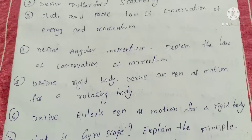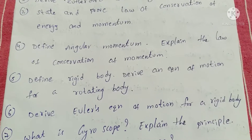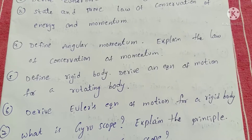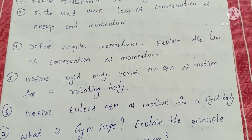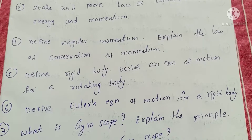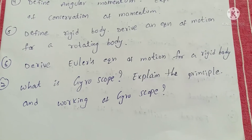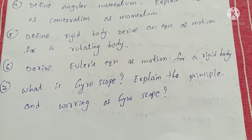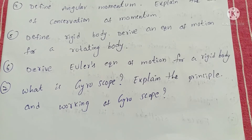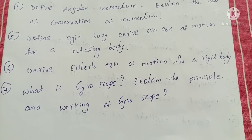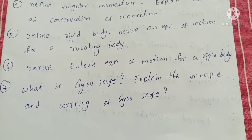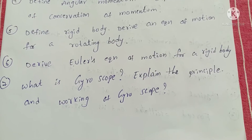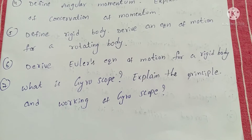Fourth question: Define angular momentum and explain the law of conservation of momentum. Fifth question: Define a rigid body and derive an equation of motion for a rotating body. Sixth question: Derive Euler's equation of motion for a rigid body.